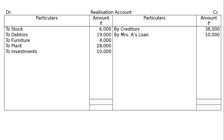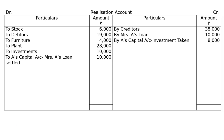Next in the Realization Account: By A's Capital Account — Investment taken by A at an agreed value of Rs.8,000. He also agreed to settle Mrs. A's Loan. So to A's Capital Account: Mrs. A's Loan taken. Mrs. A's Loan is on the liability side; A to cover Mrs. A's Loan of Rs.10,000.